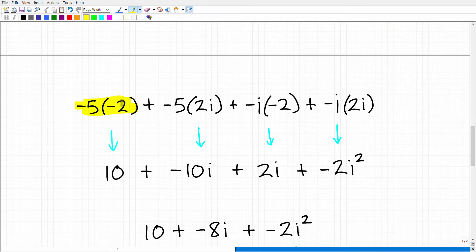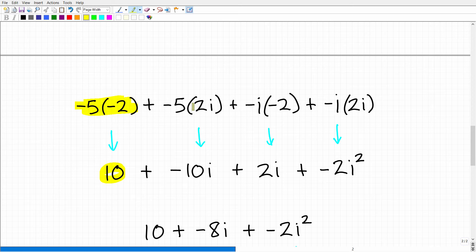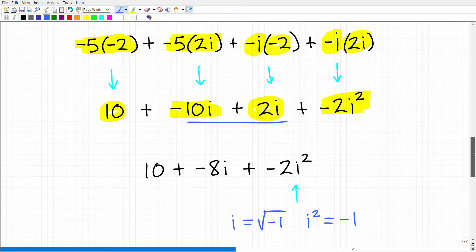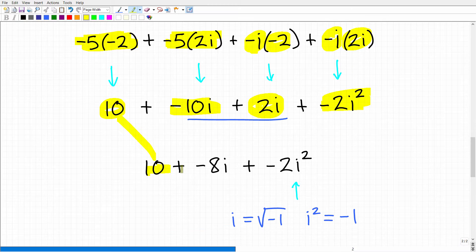So negative 5 times negative 2 is 10, positive 10. And negative 5 times positive 2i is negative 10i. Negative i times negative 2 is a positive 2i. And then here I have negative i times positive 2i. And this will be a negative 2i squared. So right here we have like terms. We have negative 10i and 2i. So that's going to give me negative 8i. So we have 10 plus negative 8i plus negative 2i squared.